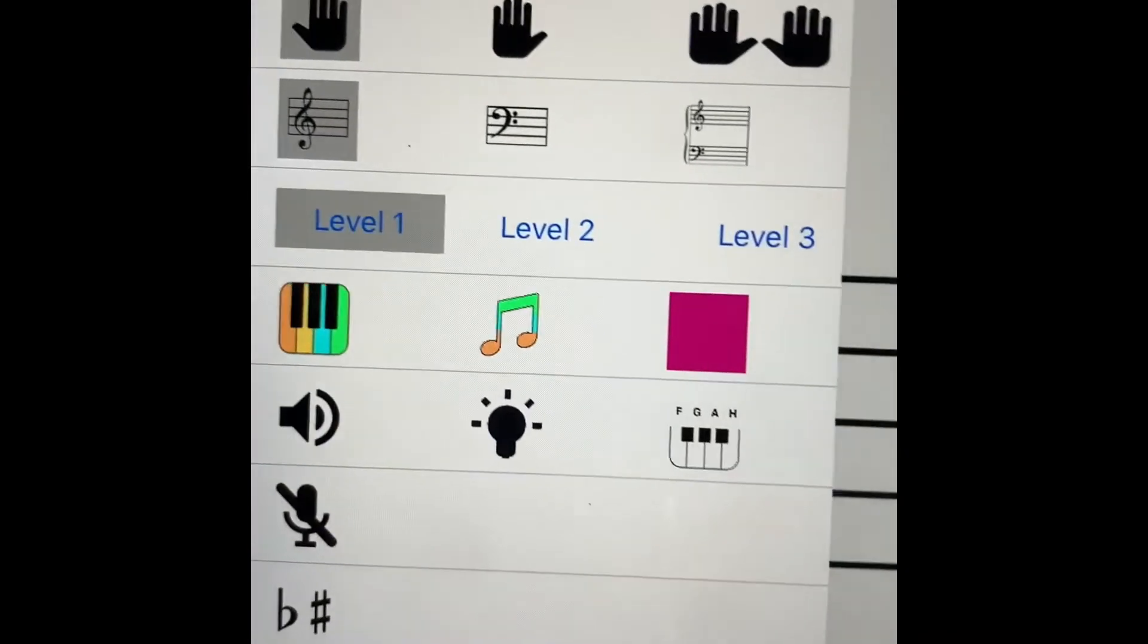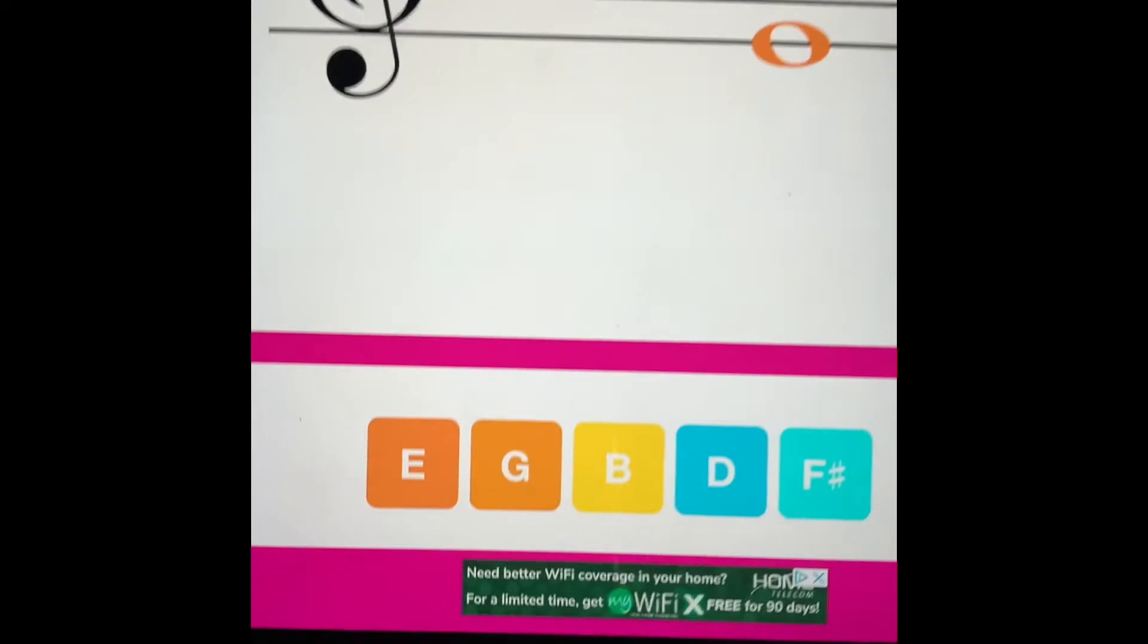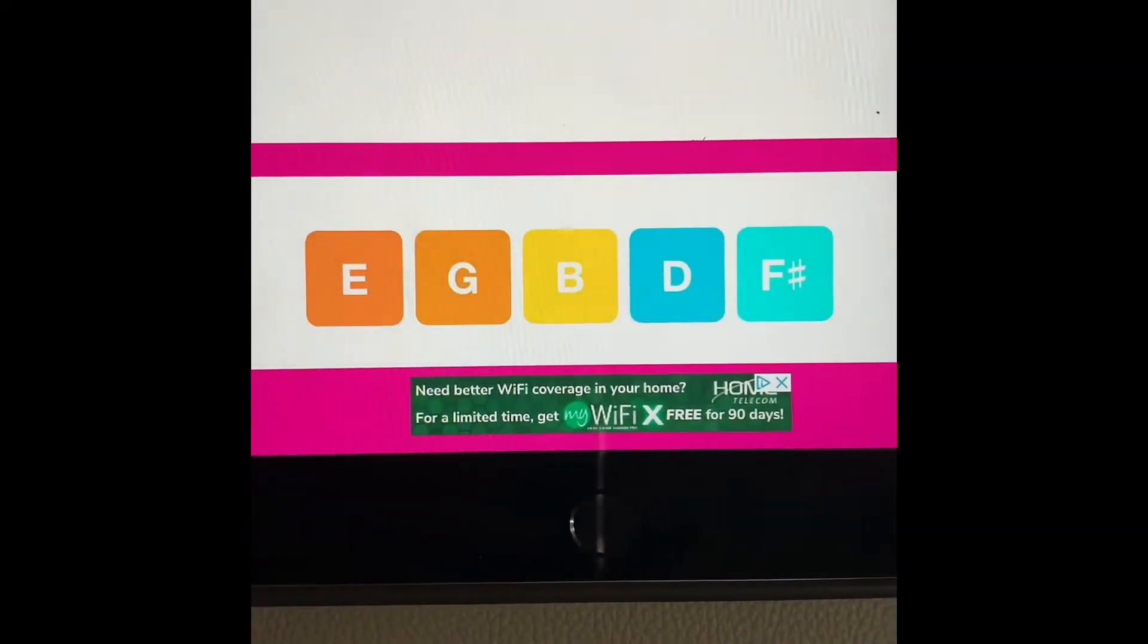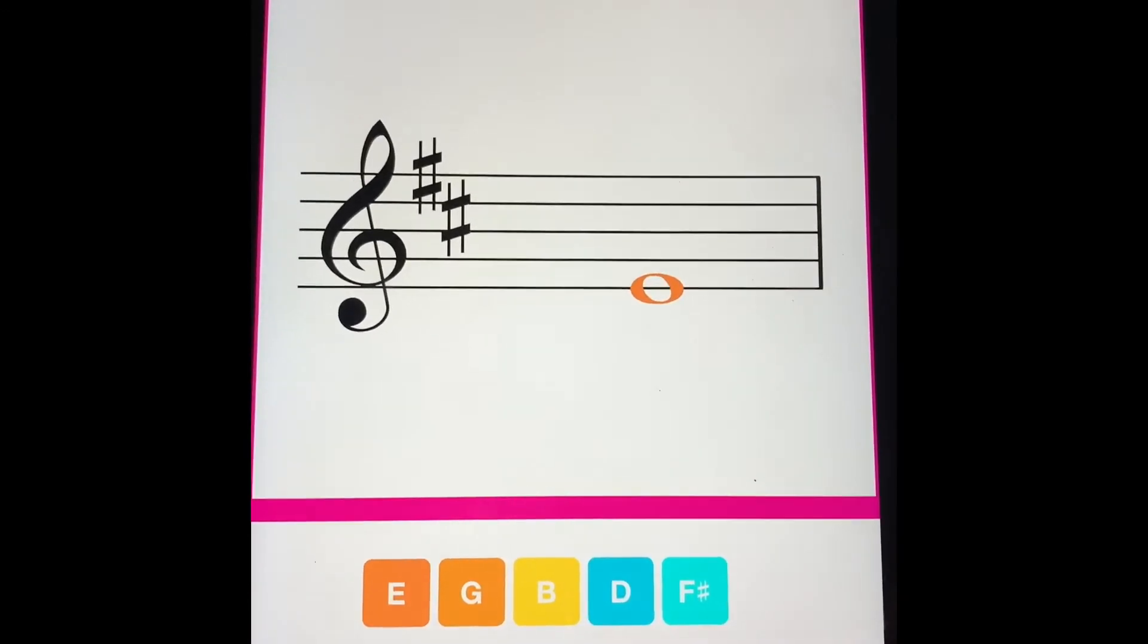Now you can see again if you go back to the left that there are three levels. Level one includes all of the lines of the staff. So those notes are E, G, B, D, and F sharp. And these are also color coordinated for helping your student.